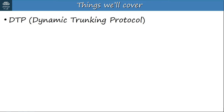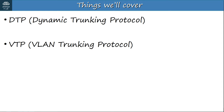We will cover DTP, Dynamic Trunking Protocol, first. DTP is a Cisco proprietary protocol that allows switches to negotiate the status of their switch ports to be either access ports or trunk ports without manually configuring them. Then we will cover VTP, VLAN Trunking Protocol — another Cisco proprietary protocol that allows you to configure VLANs on a central switch, which then acts as a server that other switches can synchronize to, so you don't have to configure VLANs on every single switch.